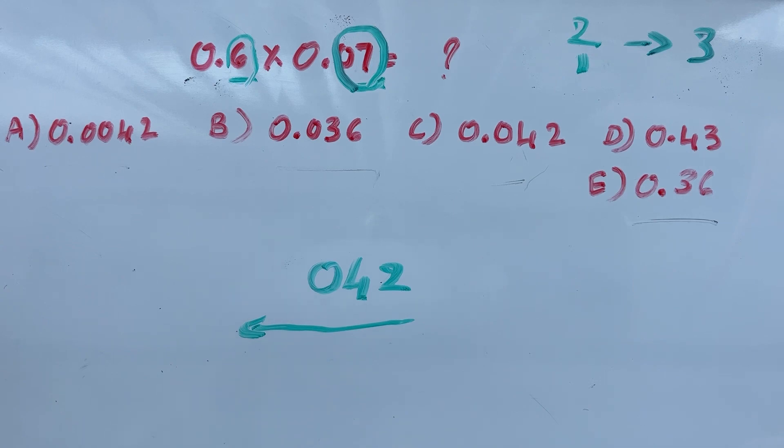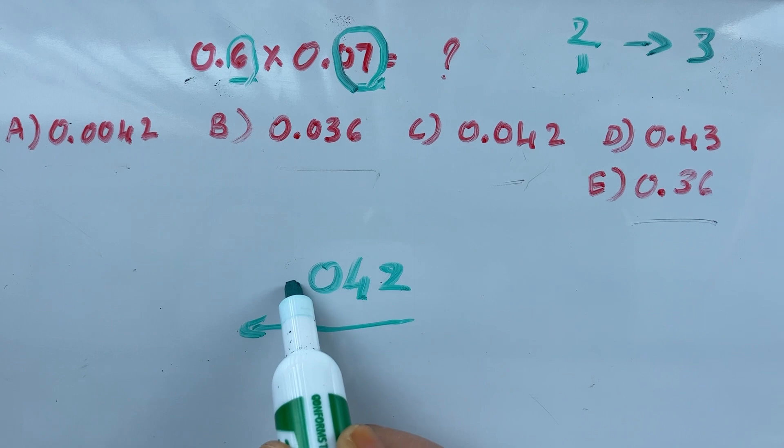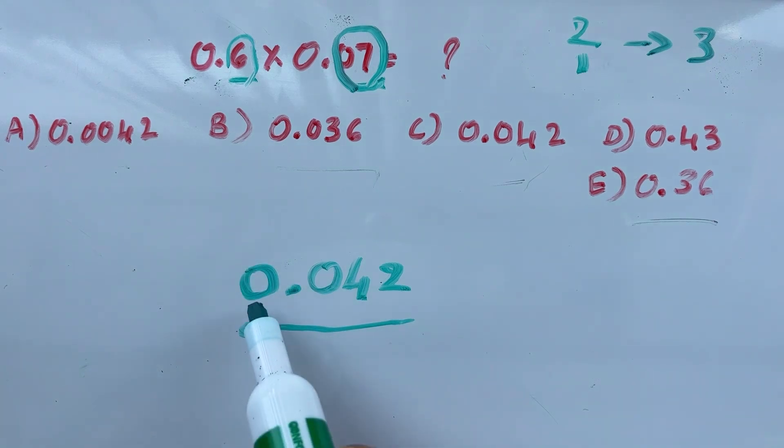zero. After that, you need to put a decimal point here, so your answer is 0.042.